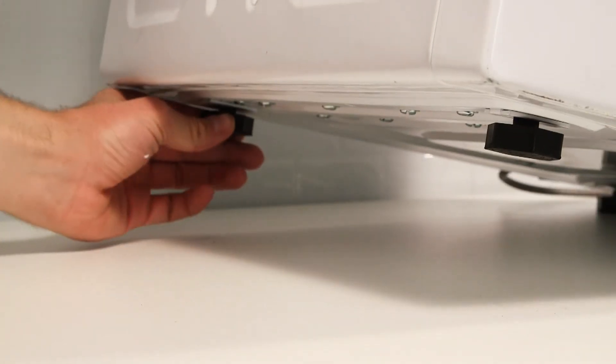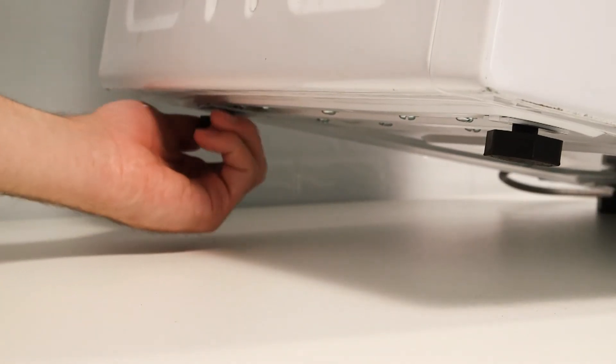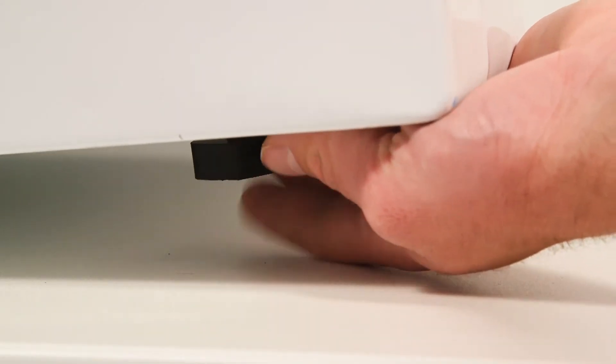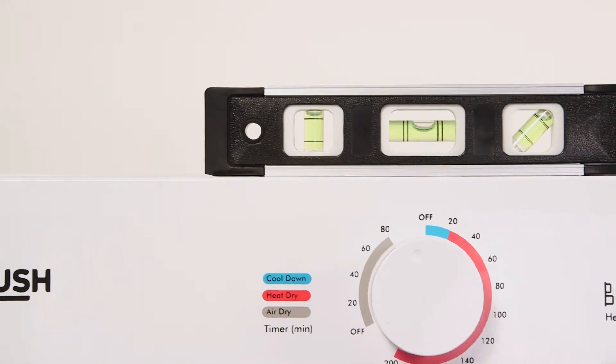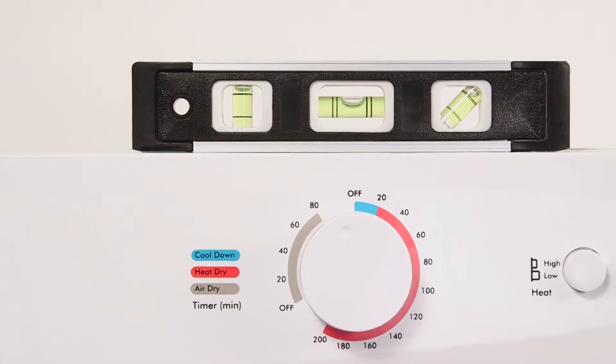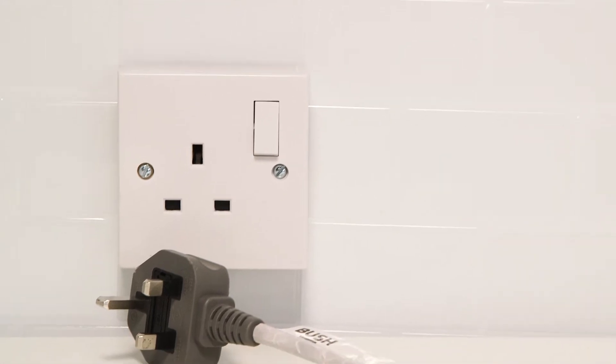To ensure the tumble dryer is balanced, rotate the feet clockwise or anticlockwise until the tumble dryer is properly balanced. Before installing the ventilation hose, ensure the tumble dryer is turned off and unplugged.